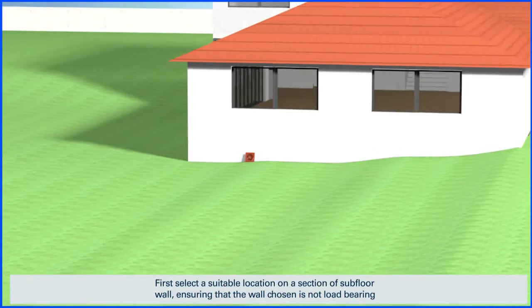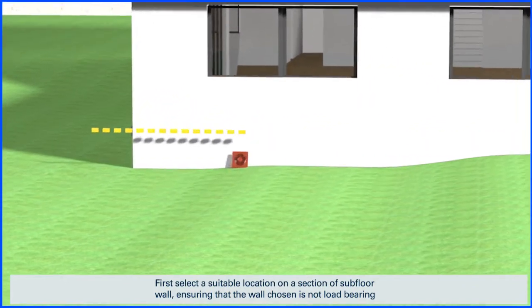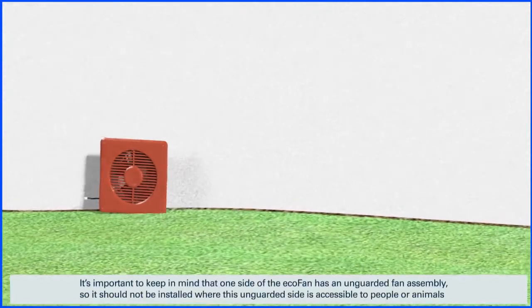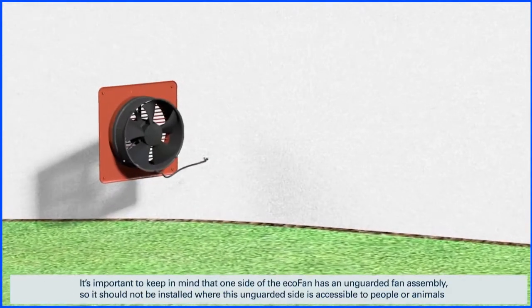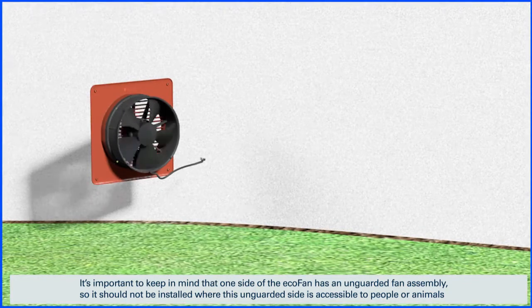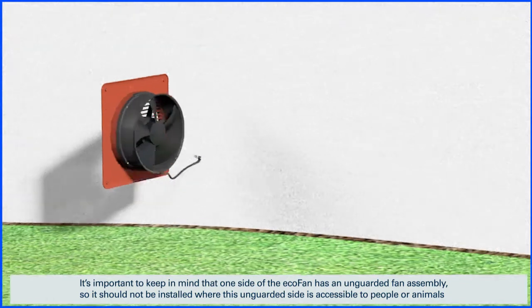First, select a suitable location on a section of subfloor wall ensuring that the wall chosen is not load-bearing. It's important to keep in mind that one side of the ECOFAN has an unguarded fan assembly, so it should not be installed where this unguarded side is accessible to people or animals.